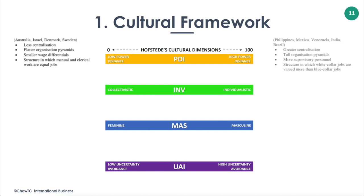Hofstede's power distance dimension focuses on how societies deal with the fact that people are unequal in physical and intellectual capabilities. High power distance cultures were found in countries such as the Philippines, Mexico, Venezuela, India, and Brazil, where inequalities grow over time into inequalities of power and wealth. Low power distance cultures were found in societies such as Australia, Israel, Denmark, and Sweden, which try to play down such inequalities as much as possible.